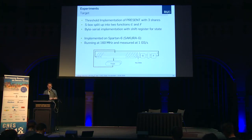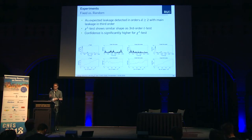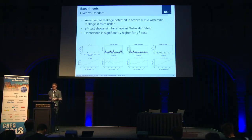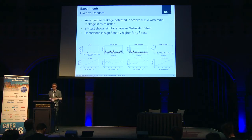We also tested this method on real hardware. We implemented a PRESENT threshold implementation with three shares on a Sakura-G board. This has a split S-box into G and F functions and is a byte-serial implementation using shift registers for the state. Looking at the fixed versus random results, the t-tests behave as expected: no first-order leakage, a small second-order leakage, and high third-order leakage. The G-squared test behaves quite similarly to the third-order t-test but at the same time gives higher confidence.